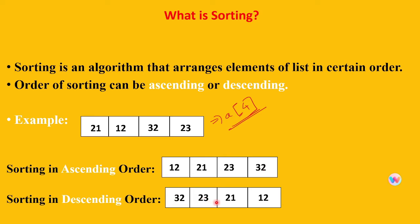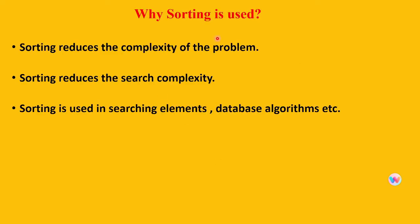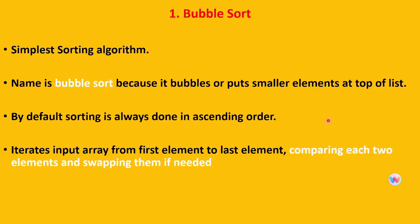Why is sorting used? It reduces the complexity of any problem. It is always better to search or access data if the data is stored in some particular order, because it makes it easy to access and search that data. So sorting reduces the search complexity. Sorting is used in searching elements and in database algorithms, etc.